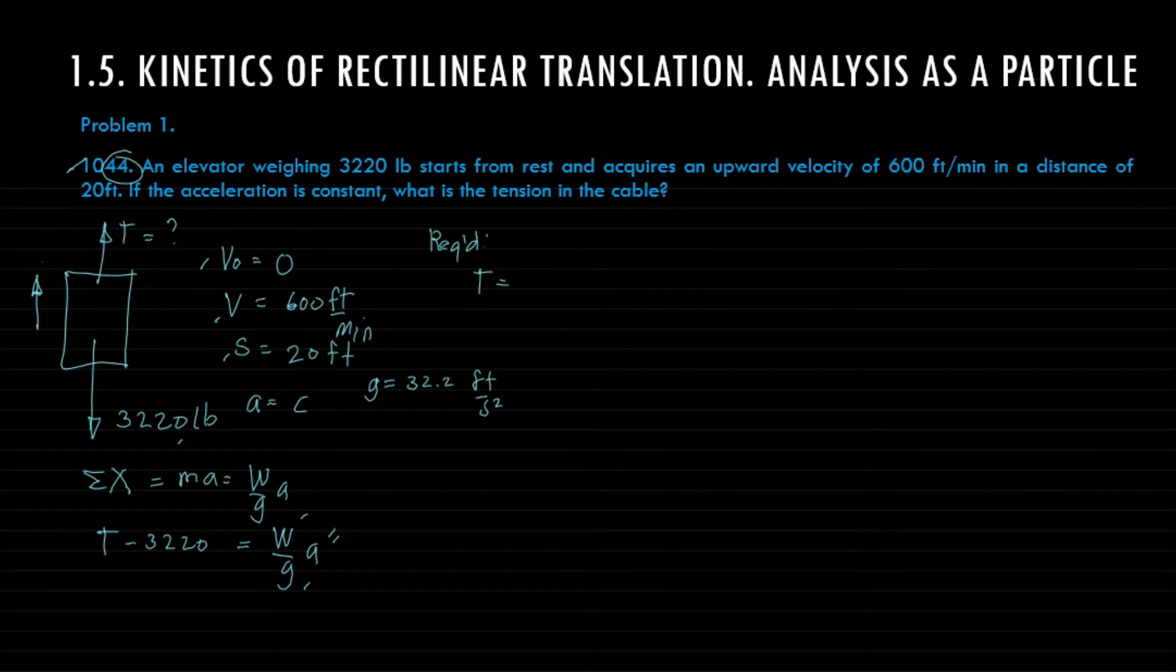So meaning we need to solve a. From the given we have v₀, v, and s. So using the kinematic equations of motion, we are going to use equation number 3, which is v² equals v₀² plus 2as. From here we can solve a.